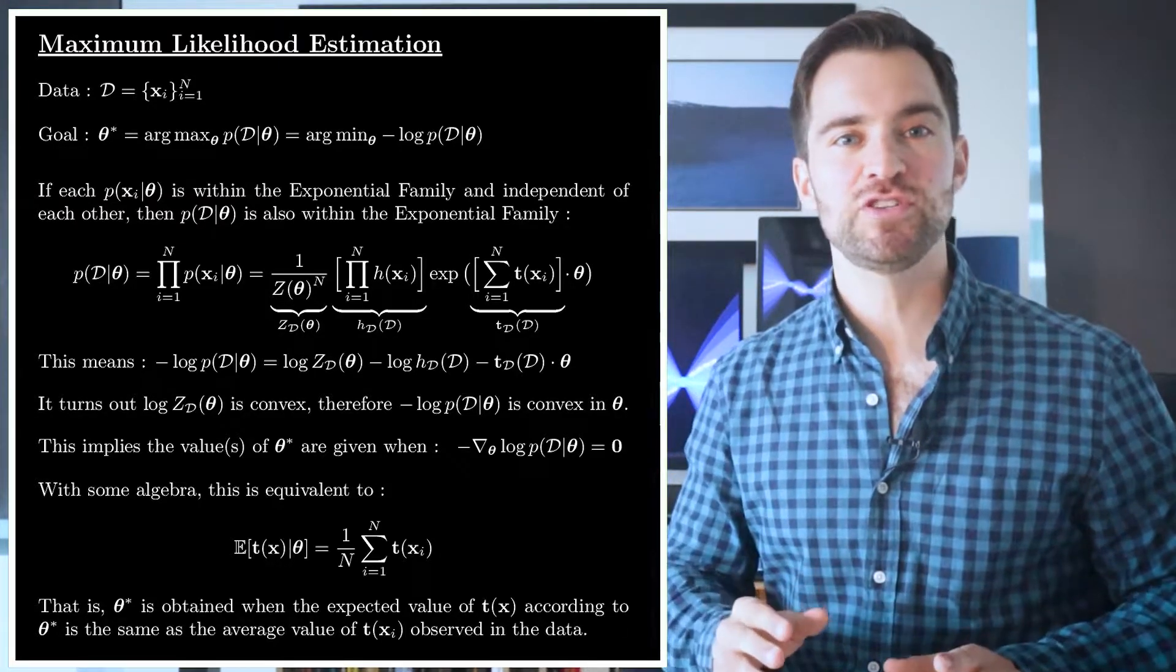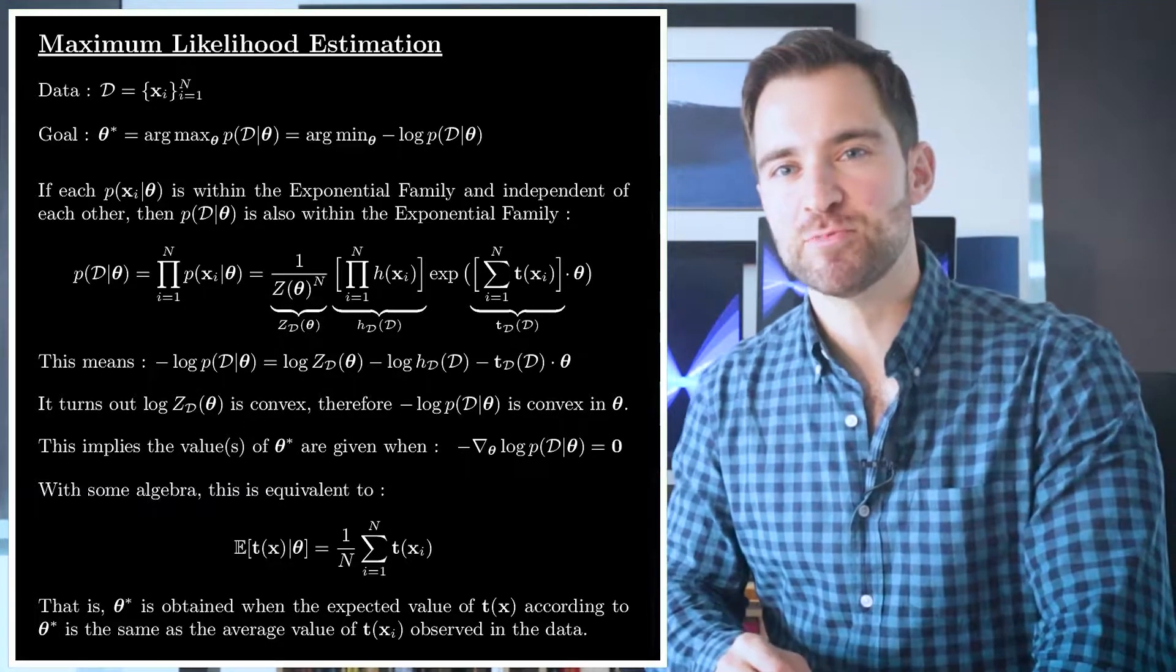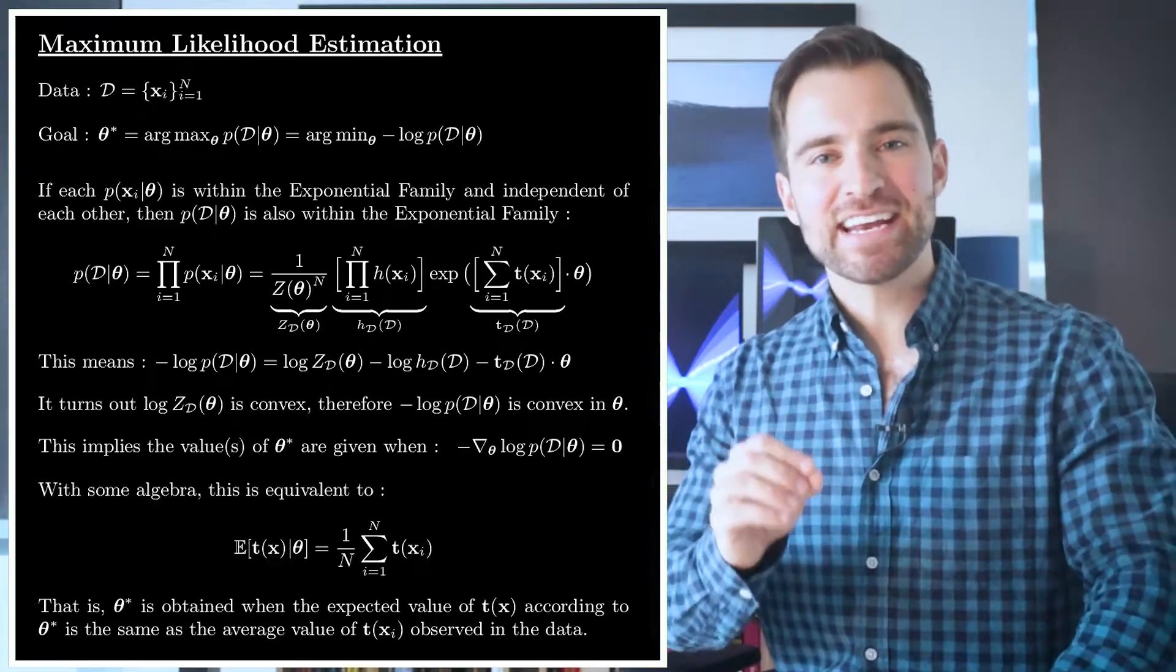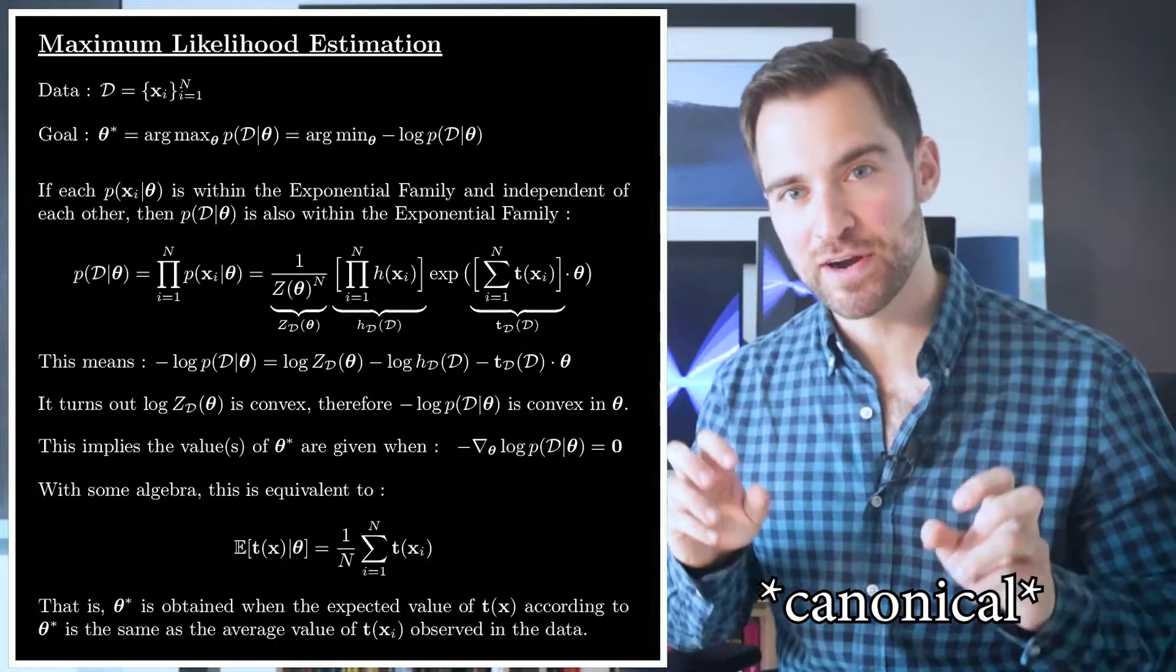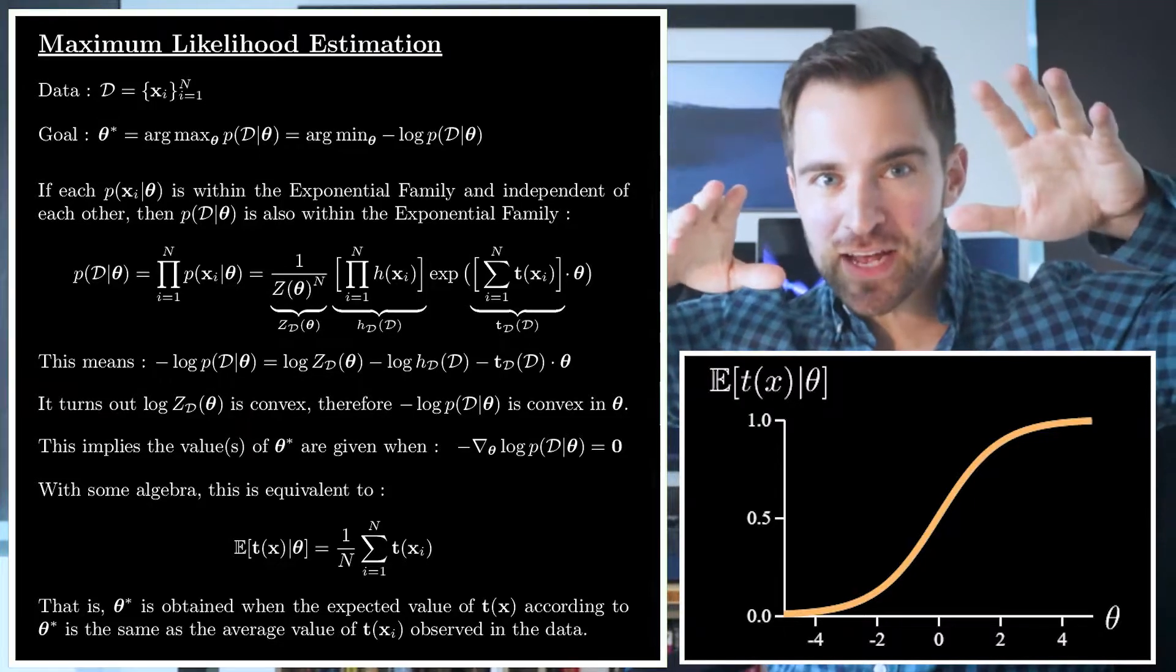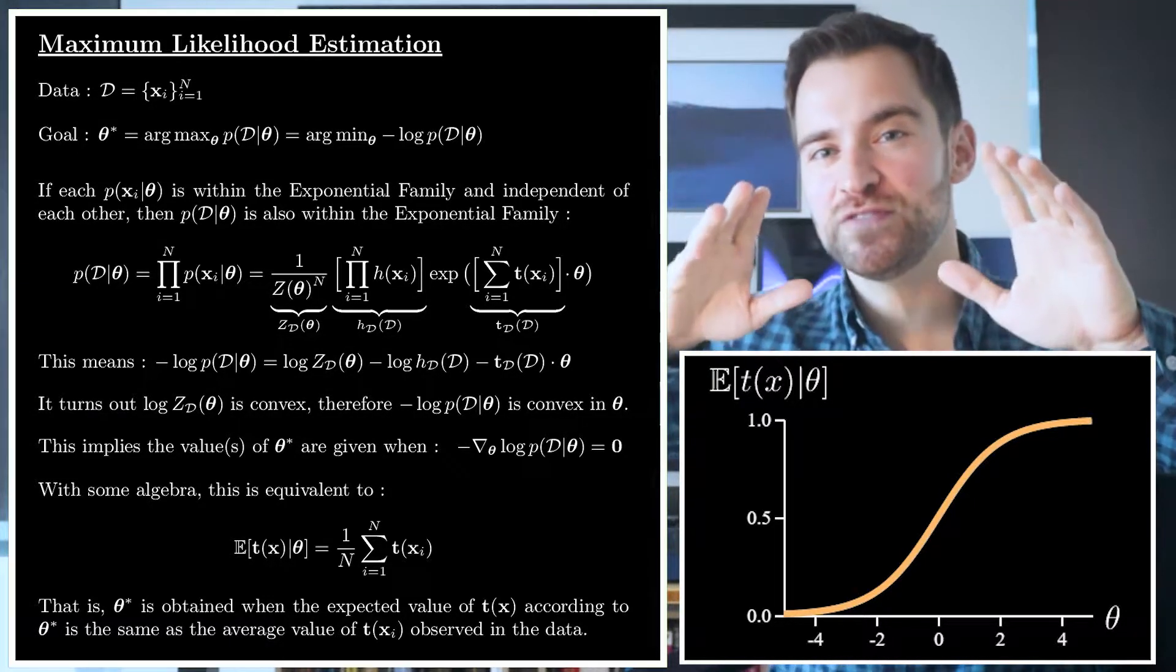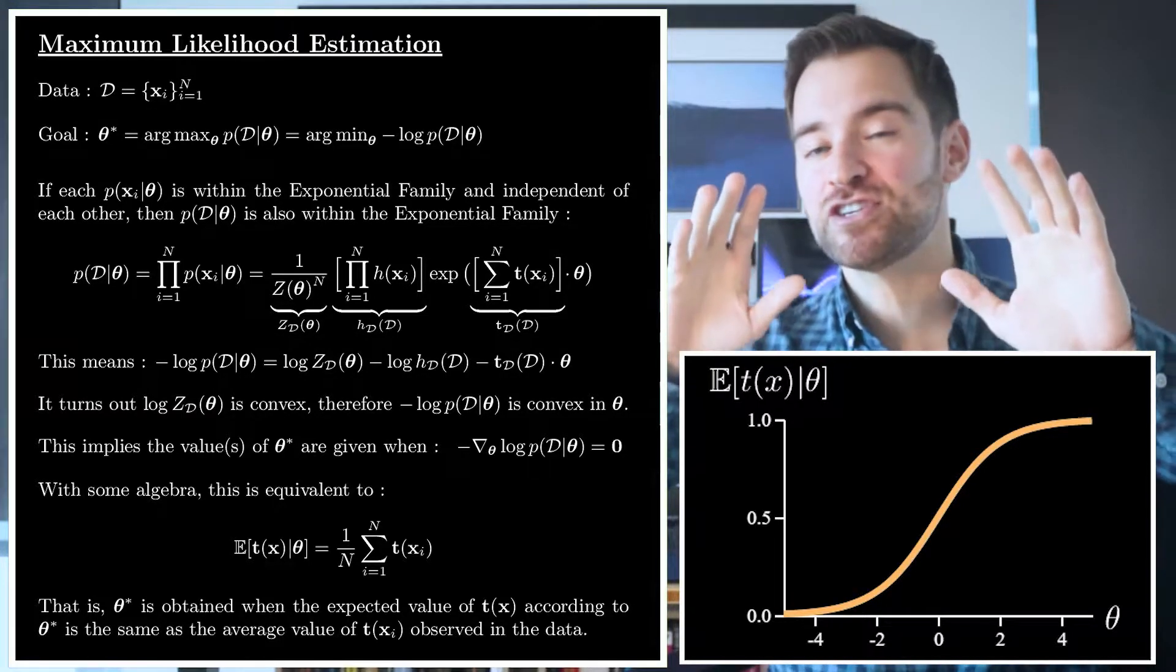In fact, looking at this equation, you could say knowing the mean value of the sufficient statistics is just another way to specify the distribution. Well, it turns out, if you know the expected value of the sufficient statistics, we say you've specified the distribution by its mean parameters. This means, for your choices of the exponential family, there is an implied mapping between the mean parameters and the θ parameters.